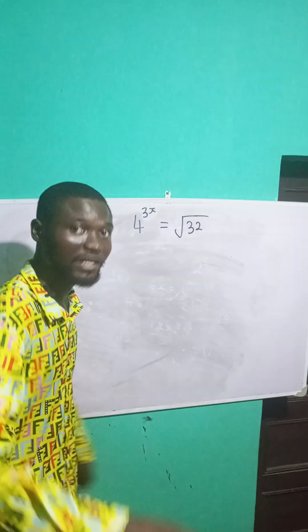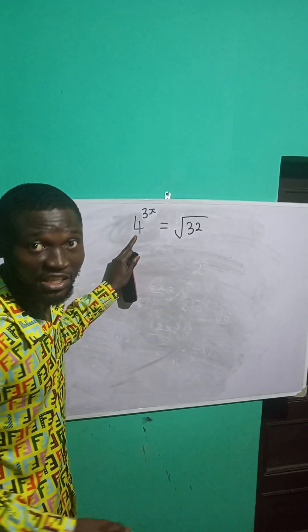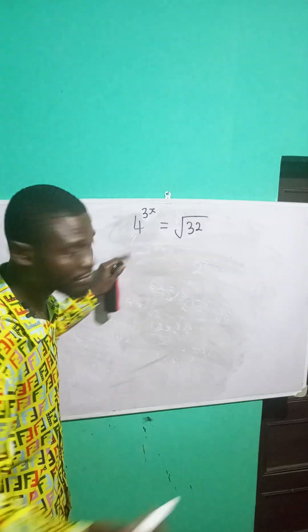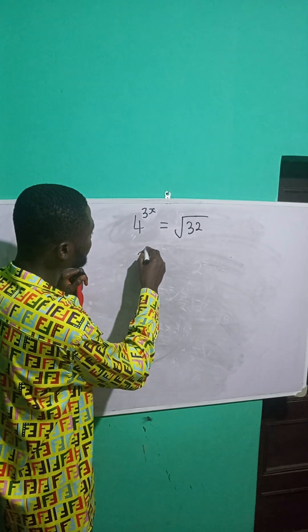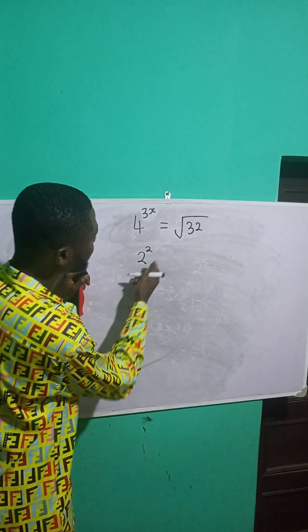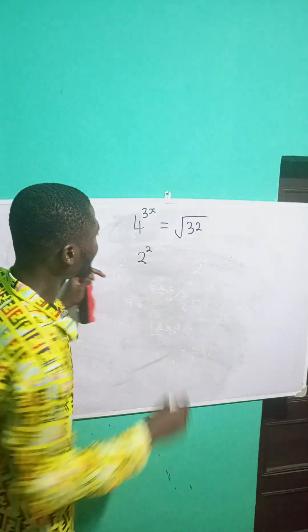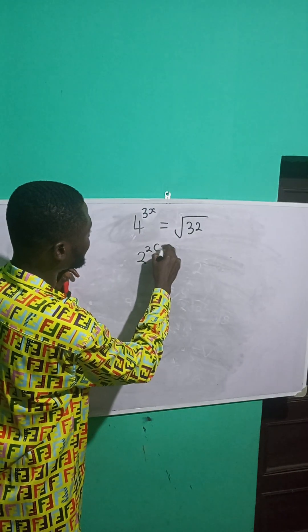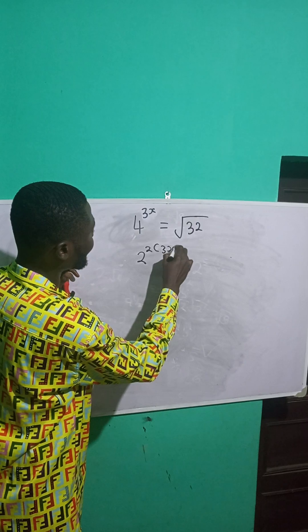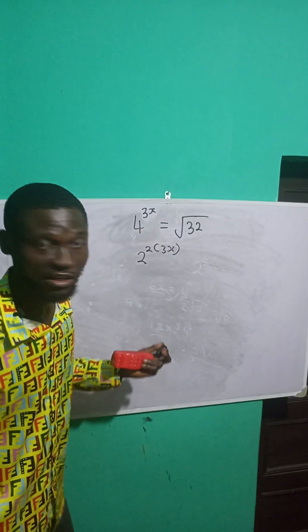Let's solve this exponential equation. I can express 4 as a base of 2, so this is 2 raised to power 2. 2 raised to power 2 will give me 4. Then, multiplied by 3 raised to power x — the already existing exponent.